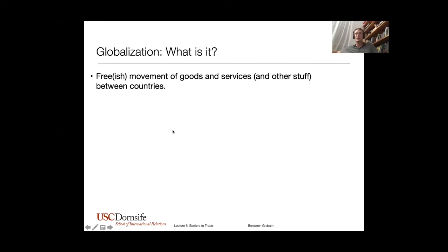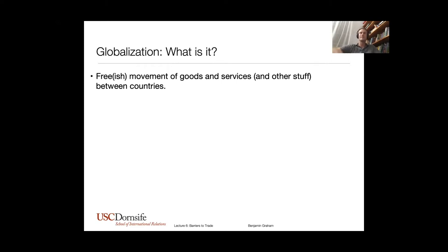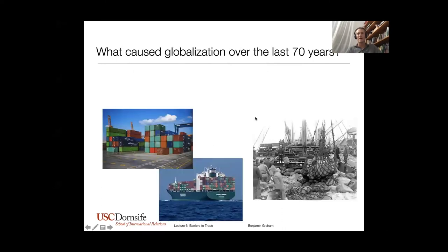So globalization — it's the free-ish movement of goods and services and other stuff between countries. Sometimes people talk about the free movement of ideas. We will talk about the movement of people across borders, but as we'll discuss in the migration section, people do not move across borders nearly as freely as goods, services, capital, ideas, things like that. So globalization is this free movement of things across borders, the end of the nation state — which I think is a little premature. We want to start with looking at where this came from over the last 70 years, going post-World War II here.